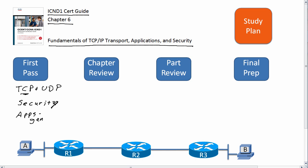After you finish the chapter and do your review, focus on TCP and UDP again and make sure you're good on the terminology. Once you're through that, you're actually through the first part of the book — the first six chapters. So you want to review and focus on TCP, because it's the only place in the book you're going to see much about it.